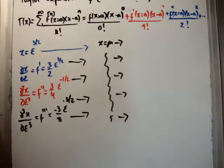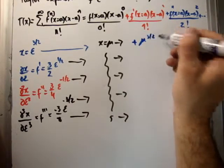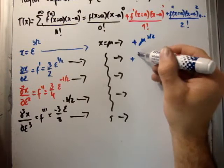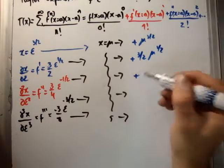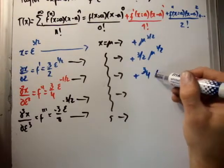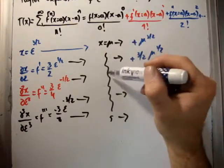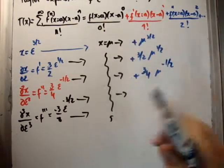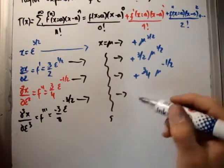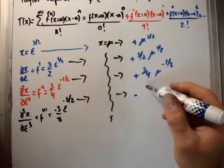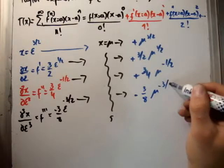If we plug that in, we're going to get plus μ^(3/2). We're going to get plus 3/2 μ^(1/2). We're going to get plus 3/4 μ^(-1/2). And finally, we're going to get minus 3/8 μ^(-3/2).